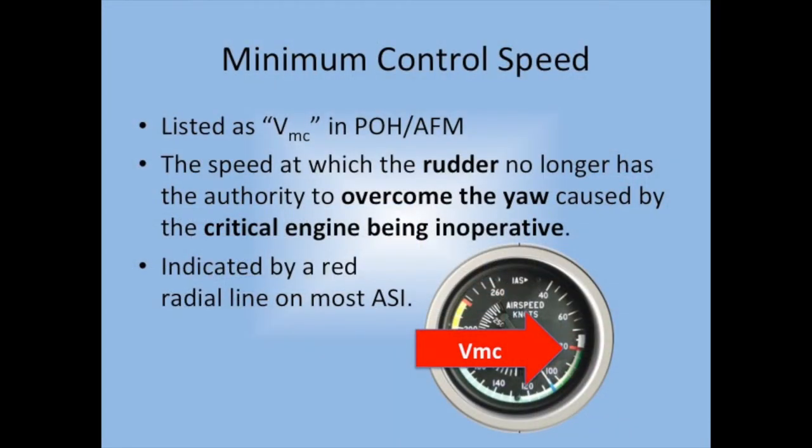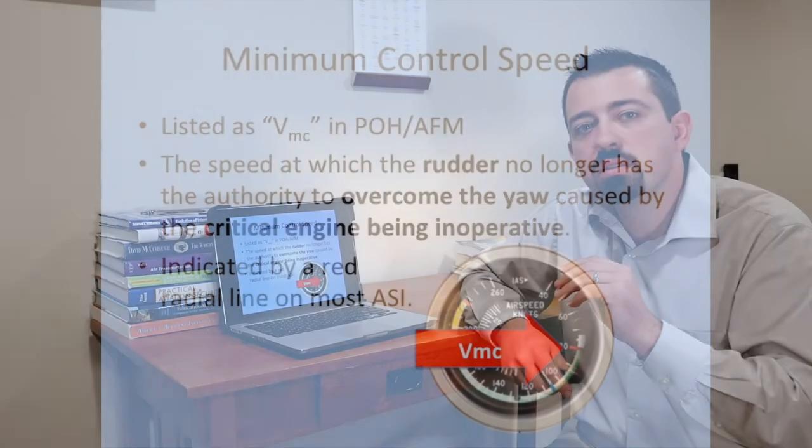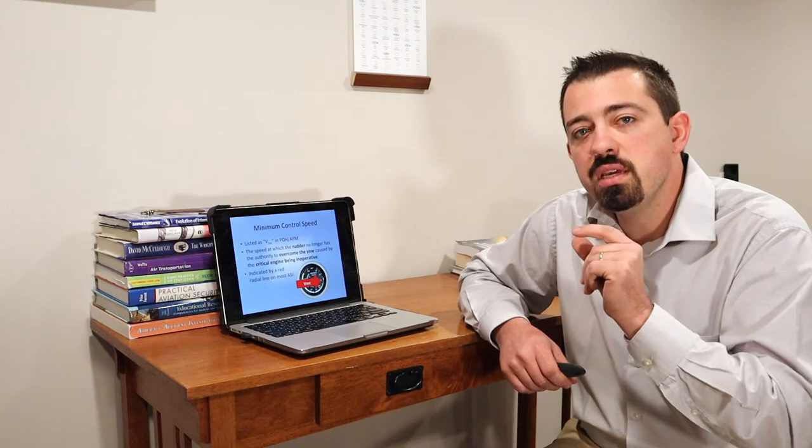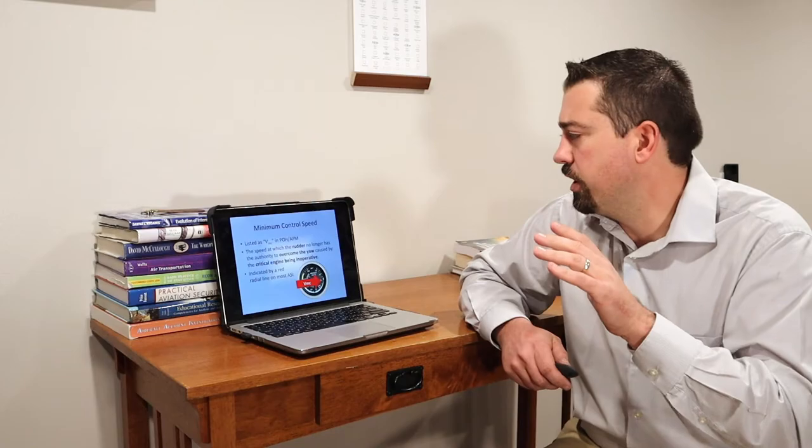Today I want to talk about minimum control speed. Minimum control speed is a speed in a multi-engine aircraft designed to be the speed at which the rudder no longer has authority to overcome the yaw produced when the critical engine has been lost. This can be indicated by a red radial line. It's a bit misleading to have a single red radial line because VMC can occur at a variety of airspeeds and there are several factors that affect it.